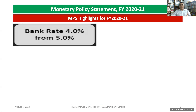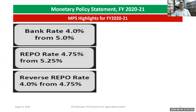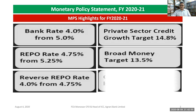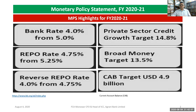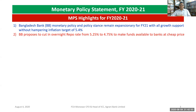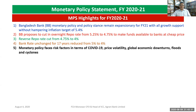The bank rate is proposed to be reduced from 5% to 4%, the repo rate from 5.25% to 4.75%, and the reverse repo rate from 4.75%. The broad money target is 13.5%, private sector credit growth target is 14.8%, and the current account balance target is 4.9 billion USD. The monetary policy remains growth-supportive with an inflation target of 5.4%. The overnight repo rate is cut from 5.25% to 4.75% to make funds available to banks at a cheaper price. For the first time in 17 years, the bank rate was changed, reduced from 5% to 4%.